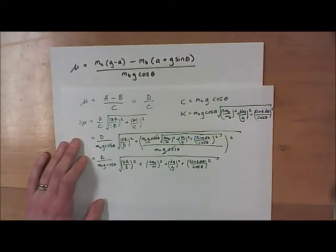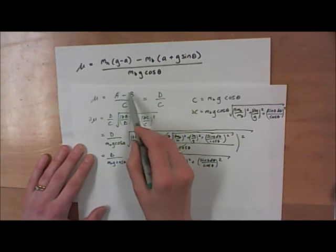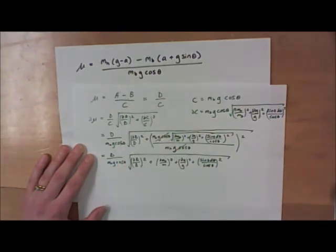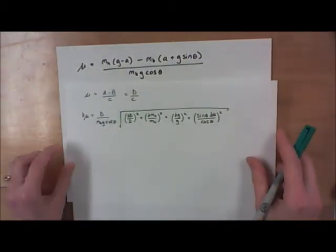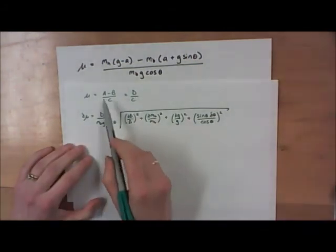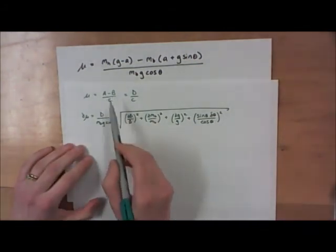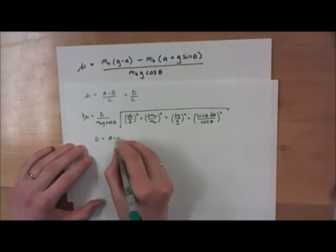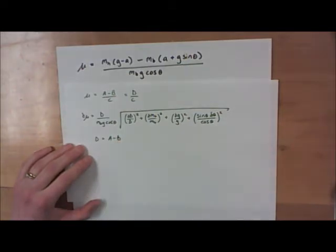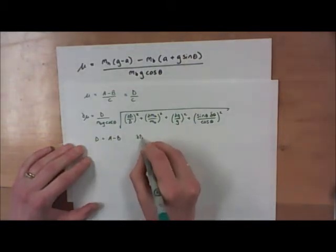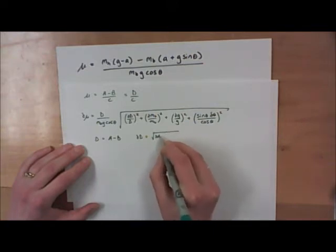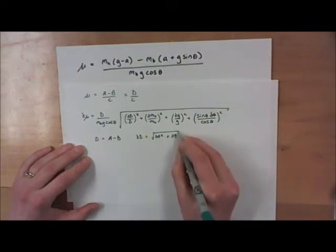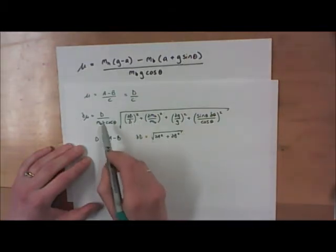Now I'm going to move on to the next part, which consists of finding the uncertainty of A minus B, which we're then going to nest inside this part of the expression. Going to a new sheet of paper. We've got D is equal to A minus B, and to find the uncertainty of A minus B, all we need to apply is the addition/subtraction rule for uncertainty propagation. So the uncertainty of D is just going to be the square root of the uncertainty of A squared plus the uncertainty of B squared.